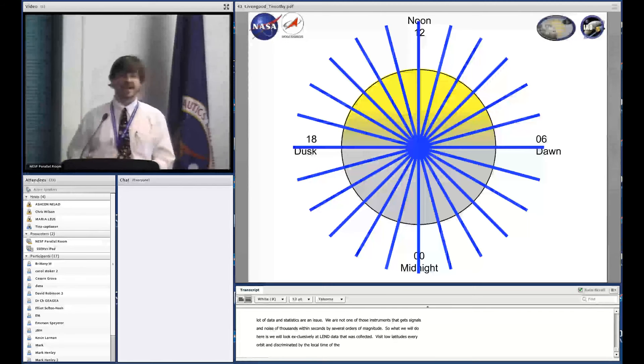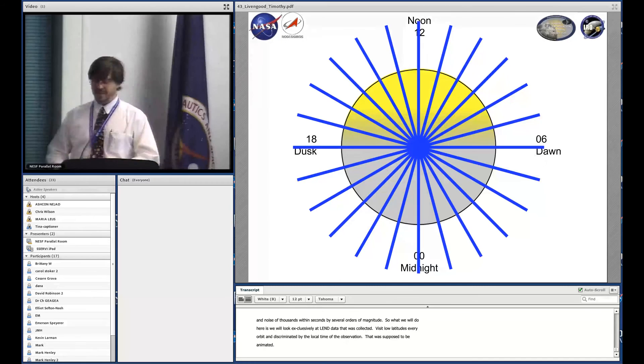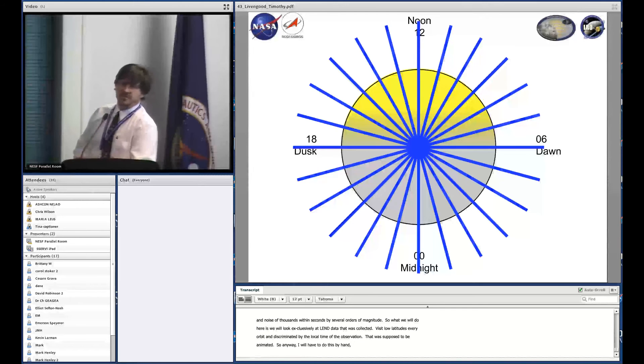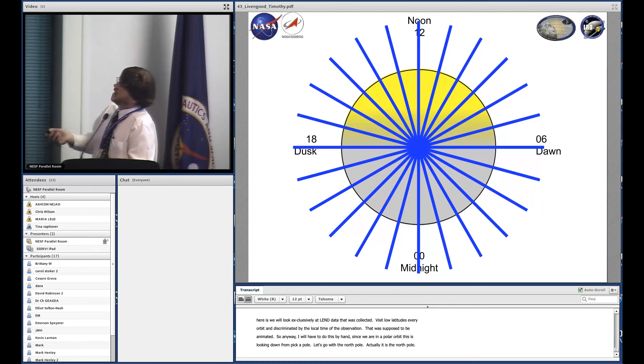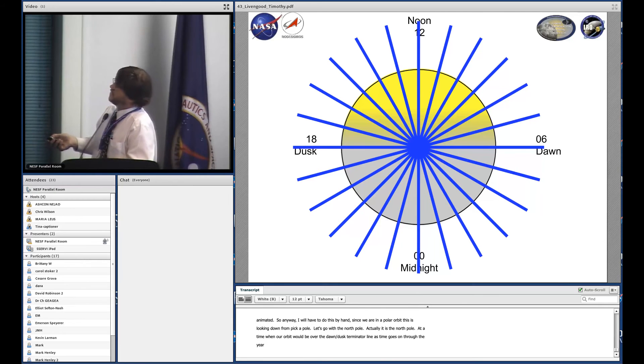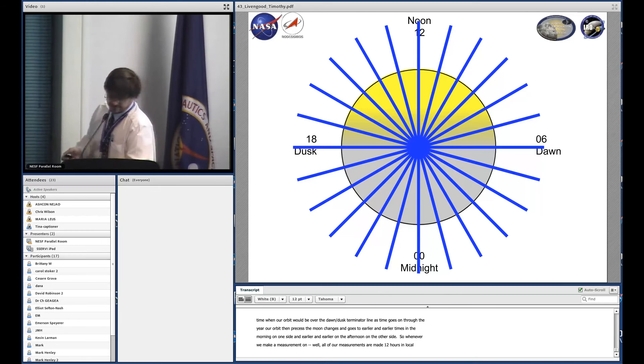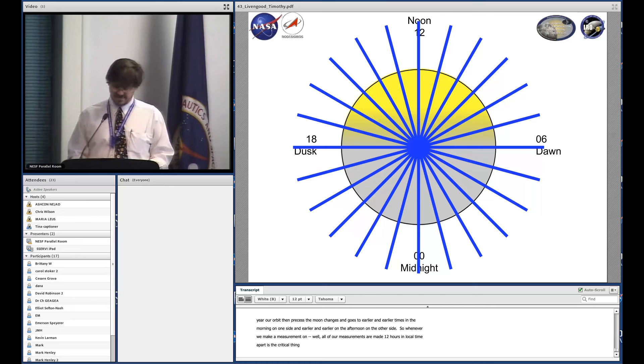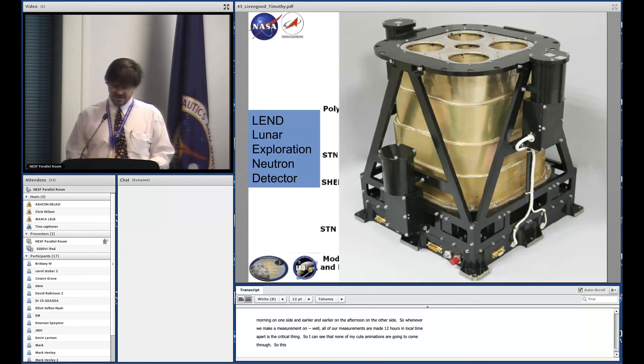Since we're in a polar orbit, this is looking down from the north pole. At a time when our orbit would be over the dawn-dusk terminator line, as time goes on through the year, our orbit precesses so that the moon changes beneath us. Our time moves to earlier times in the morning on one side and earlier in the afternoon on the other. We're symmetric, so whenever we make a measurement, all measurements are made 12 hours in local time apart.